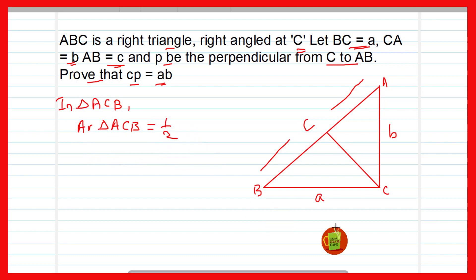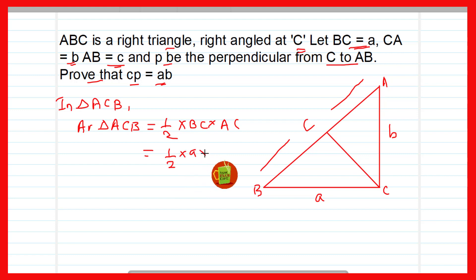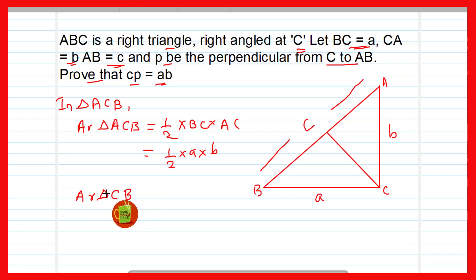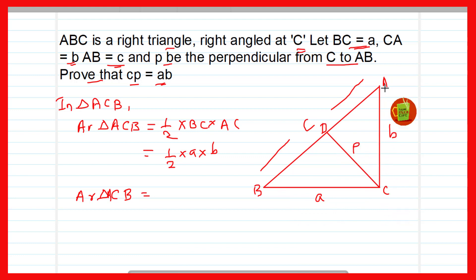Area of triangle ACB = ½ × base × height. Taking BC as base and AC as height: Area = ½ × a × b = ½ab. This is equation (1). Now we can find the area of the same triangle ABC using AB as the base, where the height will be CP, the perpendicular from C to AB.